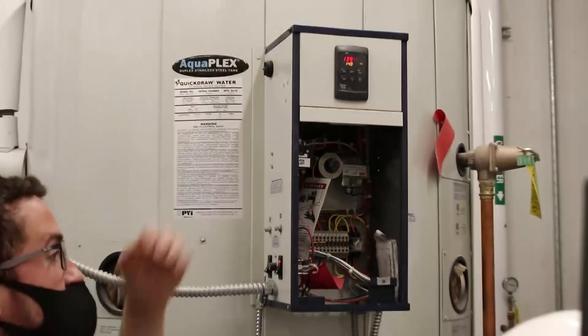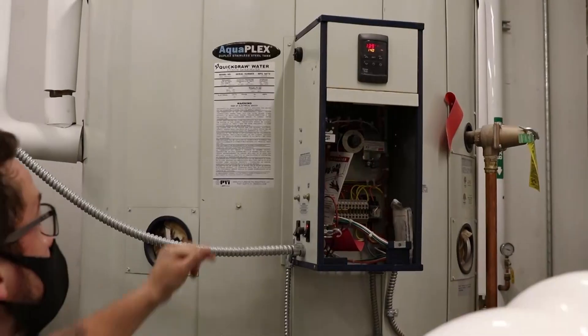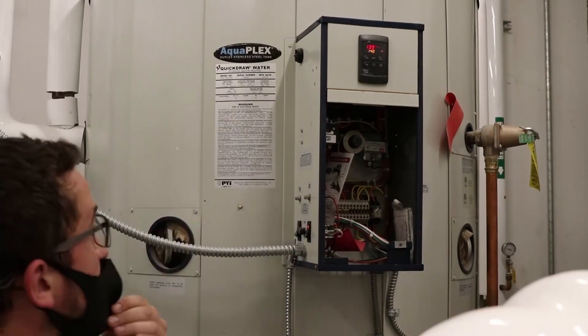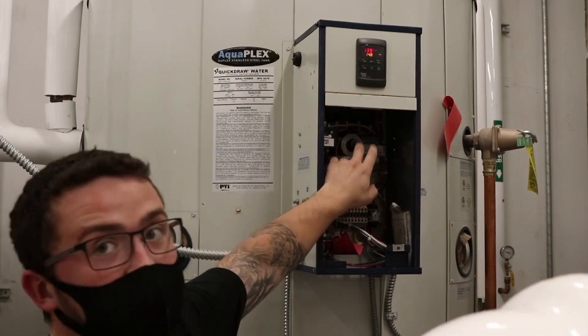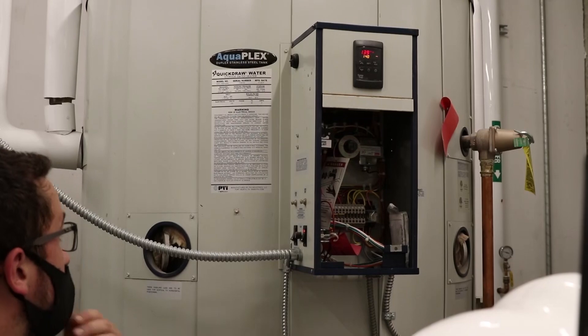So it acts as an automatic resetting high limit. It will limit the temperature at the top of the tank to whatever temperature you set the dial to. And again, that should be 10 degrees higher than the operating set point.